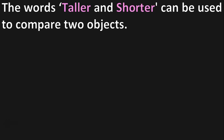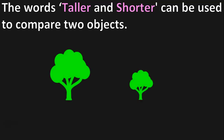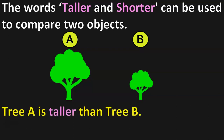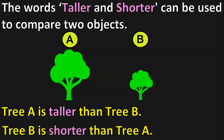The words taller and shorter can be used to compare two objects. Let us take the example of the same two trees, named A and B. Which tree is taller? Tree A is taller than Tree B. And Tree B is shorter than Tree A.